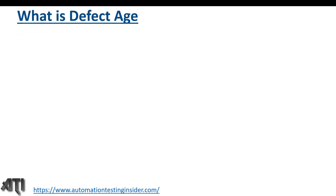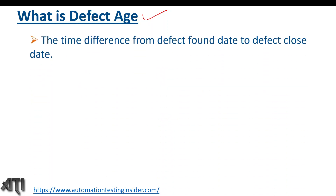Hello guys, welcome back to another video of Automation Test Insider. Today I'm going to talk about defect age. What is defect age? The time difference from the defect found date to the defect close date is called defect age. For example, if we found the defect on the 28th of this month and it got closed on the 5th of the next month, the difference is 15 days — that is the defect age.